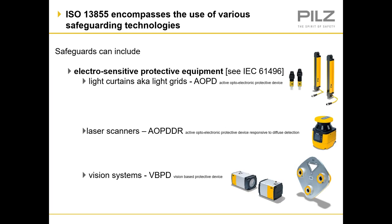The safeguards we'll look at include light curtains (AOPDs — active opto-electric protective devices), scanners — two-dimensional laser scanners — and vision systems such as the Safety Eye and the PSENvip press brake camera. All these devices must have their stop times calculated to show that they are positioned correctly.